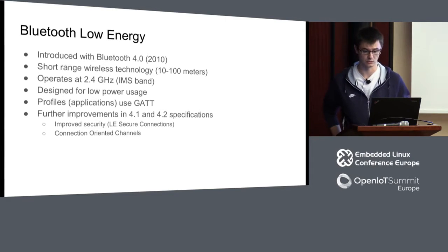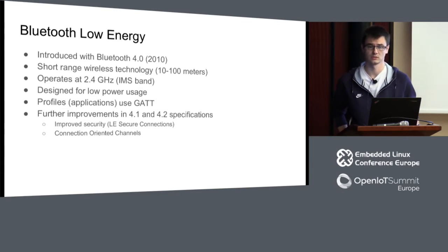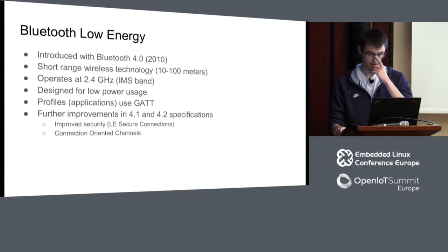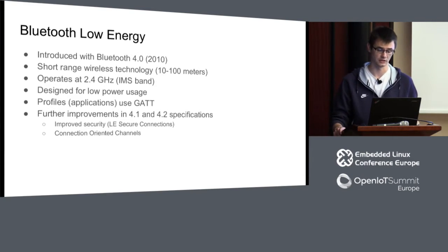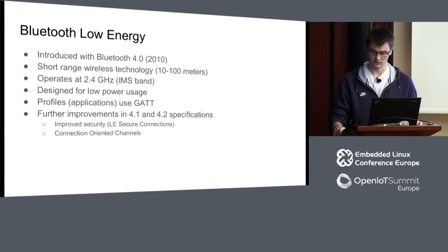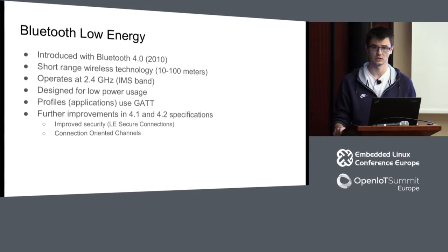Bluetooth Low Energy was introduced in 2010 with the presentation of core specification 4.0. It is a short-range technology — about 100 meters top — and operates on the 2.4 GHz ISM band. It's designed for low-power use cases, and applications are typically implemented as profiles that use GATT, the Generic Attribute Protocol. In core specification 4.1 and 4.2 there were further improvements, including secure connections where key generation is done with elliptic curve crypto, and connection-oriented channels.